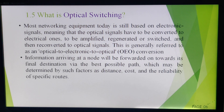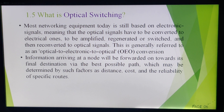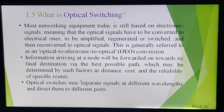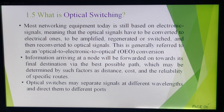Here I have different nodes. Information arriving at a node will be forwarded towards its final destination via the best possible path. We can select the path while transmitting the optical signal, which may be determined by factors such as distance, cost, and reliability of specific routes. Optical switches may separate signals at different wavelengths and direct them to different ports. There are two rate parameters associated with optical switch performance: switching rate and signal transmission rate.